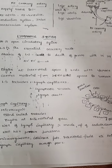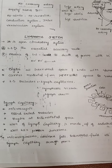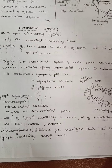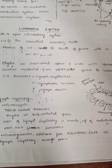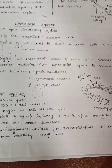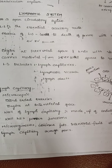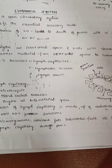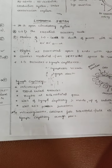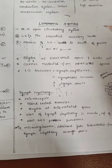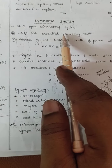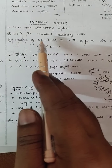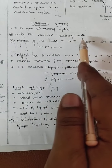Good morning. In the previous class we discussed about the lymphatic system and blood clotting factors. We can go for some more information regarding the lymphatic system. The lymphatic system is an open circulatory system and is an essential accessory route.